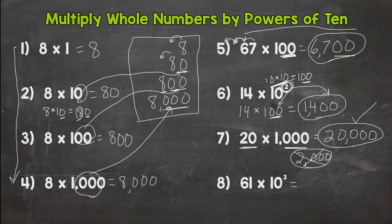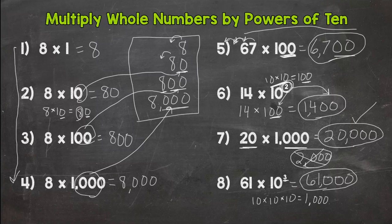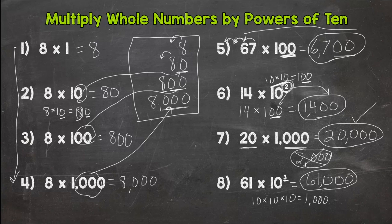Number 8 is 61 times 10 to the third power. 10 to the third power means 10 times 10 times 10, which is 1000. So we have 61 times 1000. We put three zeros on the end to push everything to the correct place values, and we get 61,000. To summarize: you use zeros to push everything to the correct spot, and you check what the exponent is or how many zeros are in your power of 10 — that matches how many zeros you add to your answer.